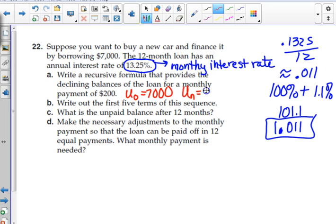Multiply by that 1.011. And then what? Subtract 200, add 200? This is the balance on our loan, so when we hand them $200, the balance does what? Goes down, because balance means what we still have to pay. All right.